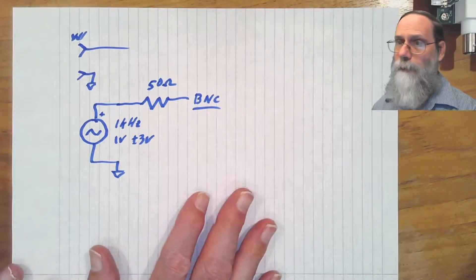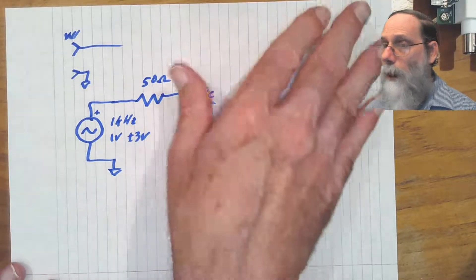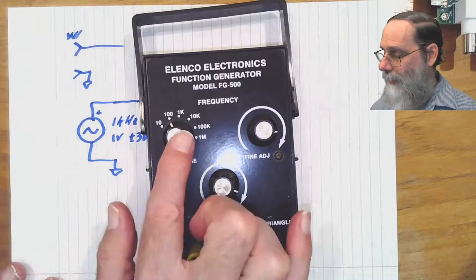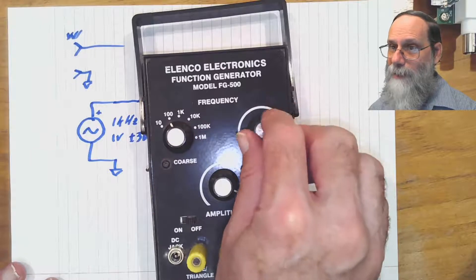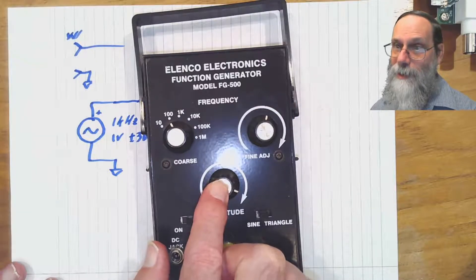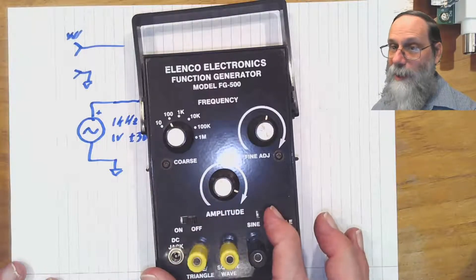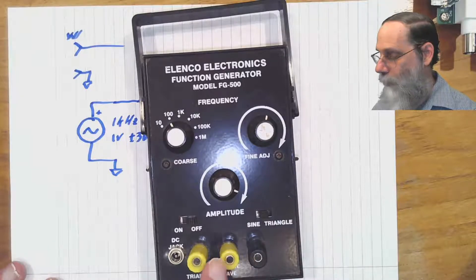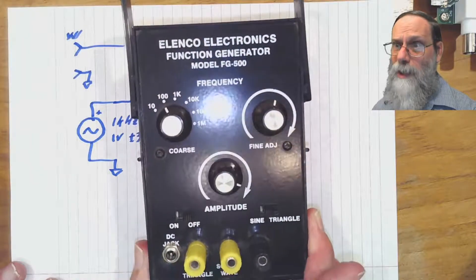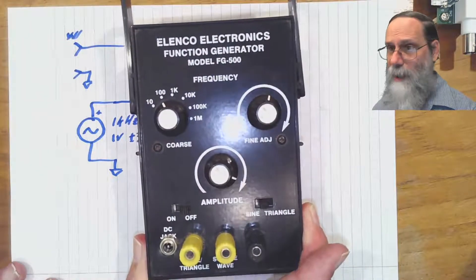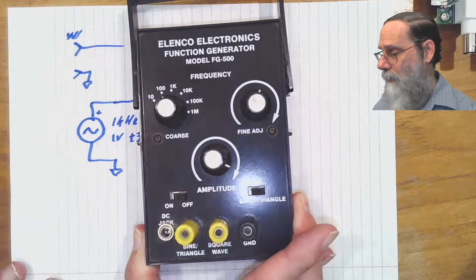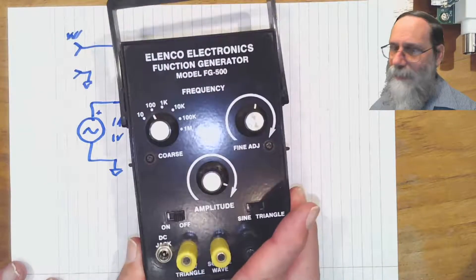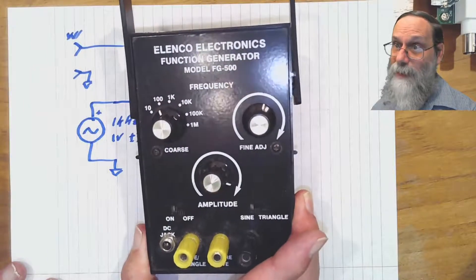So I showed you that huge old function generator. There are other ones on the market for hobbyists. For instance, this little function generator here has got a knob for the frequency range, a fine adjust for adjusting the frequency, another knob for adjusting the amplitude, switching between sine and triangle wave, and then it's got banana plugs here for taking out the ground and either the square wave or the sine and triangle wave. It's a really terrible function generator. The quality of the sine wave is not good. It's very hard to get the frequency you want with this potentiometer if you're hard to make it repeatable. It's cheap, but not really even worth what it costs.